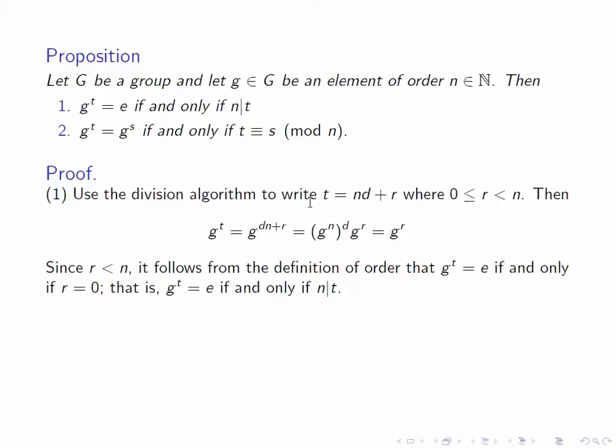Now let's look at the more general case. g to the t equals g to the s is equivalent to g to the t minus s equal to e, by the laws of exponents, multiplying both sides by g to the minus s. Now by part one, g to the t minus s equals e if and only if n divides t minus s, and that of course is the very definition of t and s being congruent mod n.